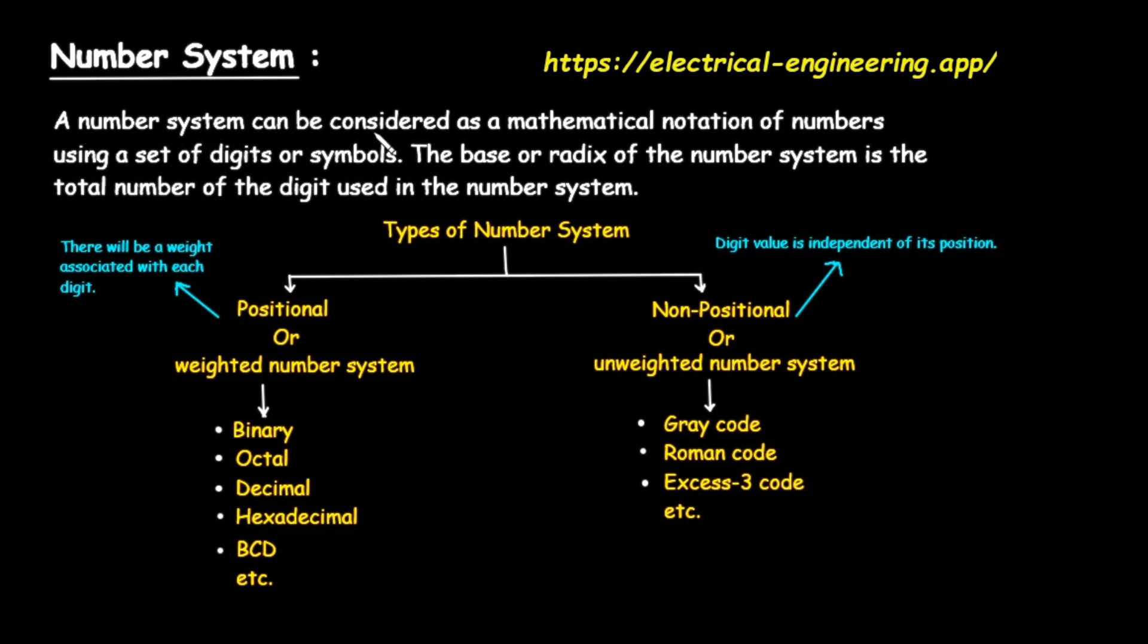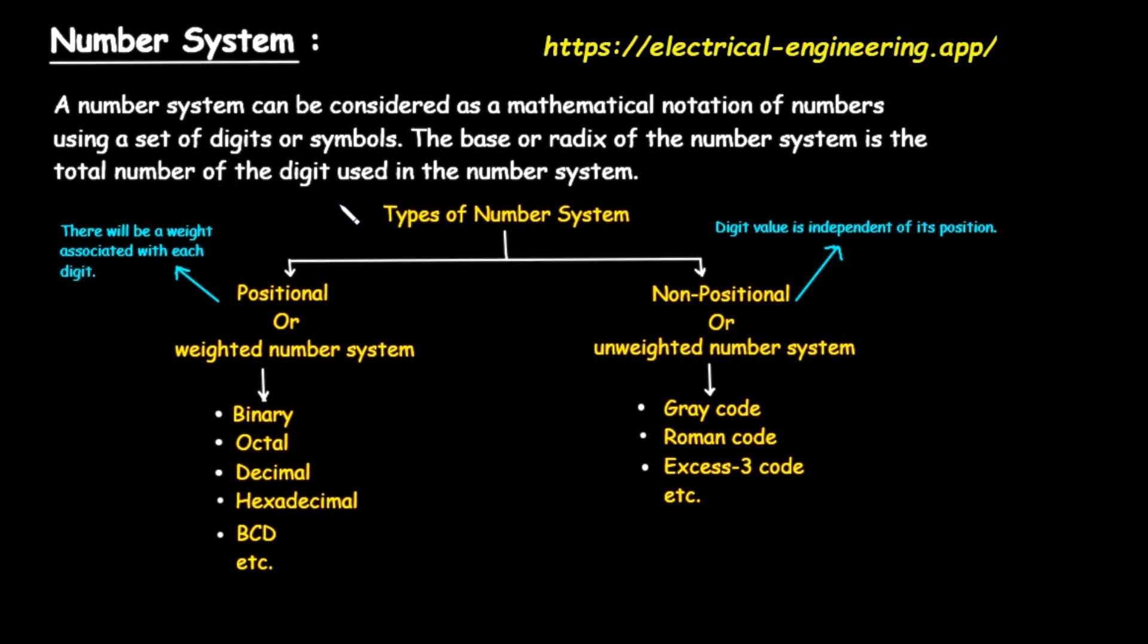As our guide shows, a number system can be considered as a mathematical notation for representing numbers. Think of it like a language. In English, we use letters to form words. In a number system, we use a specific set of digits or symbols to represent numerical values. The most important concept in any number system is its base or radix. These two words mean the exact same thing. The base or radix of a number system is simply the total count of unique digits or symbols used in that system. This idea of the base is the key to understanding everything that follows.